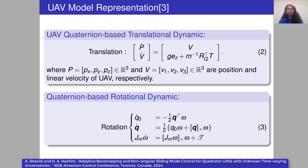The UAV quaternion-based translational dynamic is represented by this equation. P is the position, V is the linear velocity. The quaternion-based rotational dynamic is as follows: Q0 is the first element of the quaternion vector, Q is the three other elements of the quaternion vector, Jm is the inertial matrix, and omega is angular velocity.